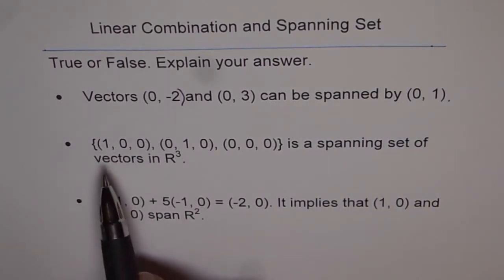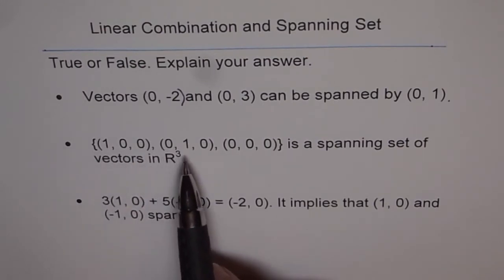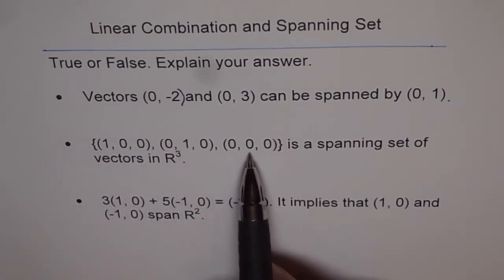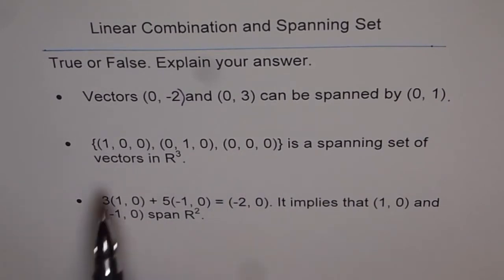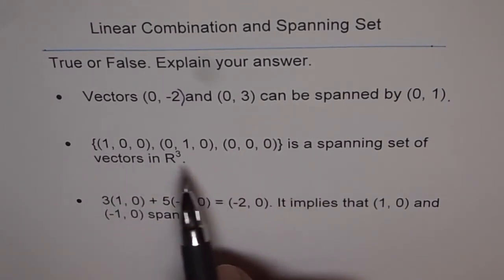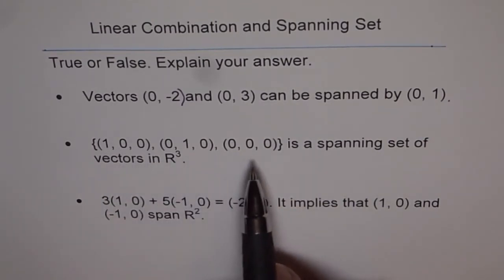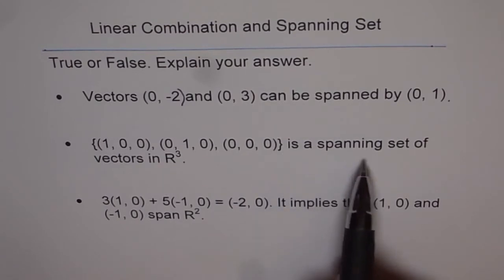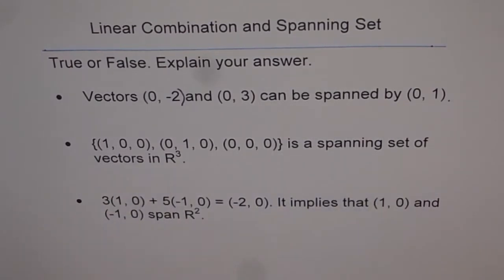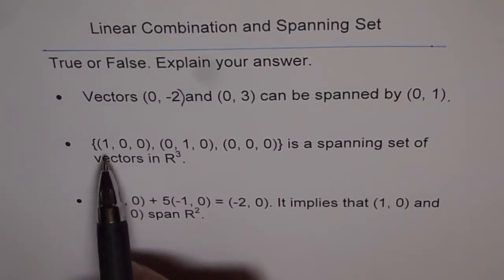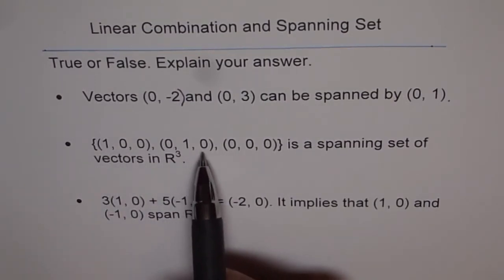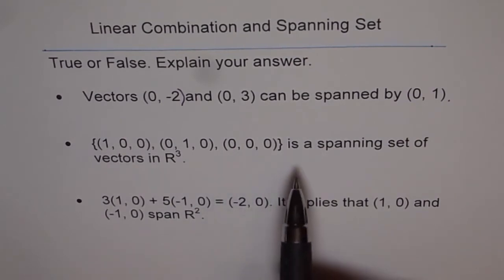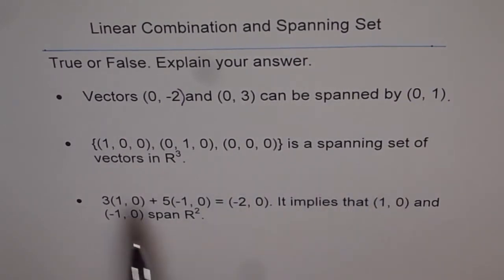Part two is {(1,0,0), (0,1,0), (0,0,0)}. So these are set of three vectors. So these set of vectors is a spanning set of vectors in R³. So that is the second. Is it true or false? So the given set is a spanning set of vectors in R³. True or false?